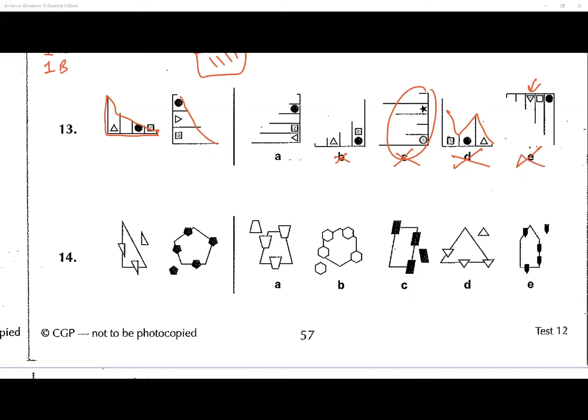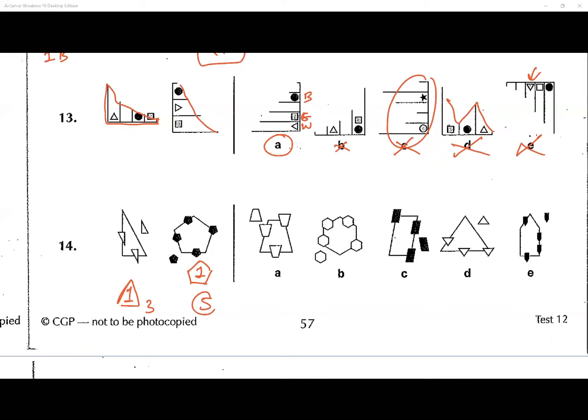Question number fourteen: we have one main triangle with three extra triangles, and one main pentagon with five extra pentagons. The rule is: the number of extra shapes equals the number of sides of the main shape. So a trapezium (four sides) must have four extra trapeziums — that matches option A perfectly. A six-sided shape with only five extras is wrong; a three-sided shape that doesn't match is also wrong.